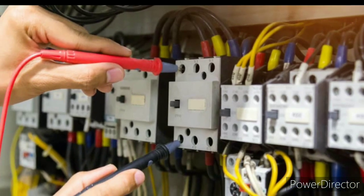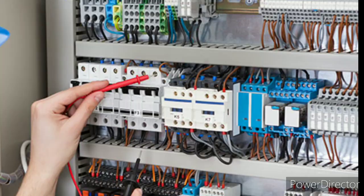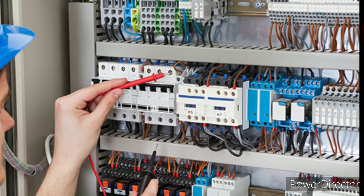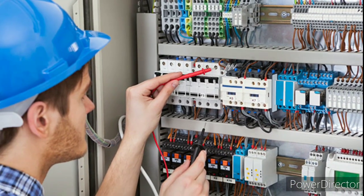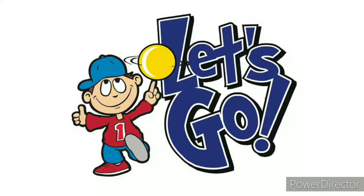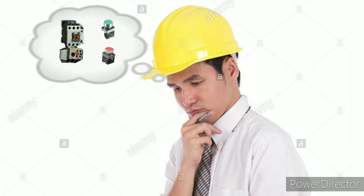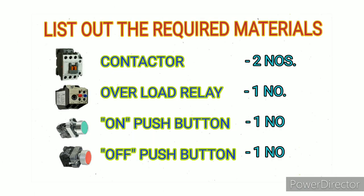This video has step-by-step making procedure how to draw and prepare the drawing. Let's go. First of all, before starting the drawing, we need to think about the materials required. We need to prepare a list of required components. Here I have given the material required list: contactors two numbers, overload relay one number, on push button and off push button each one number.